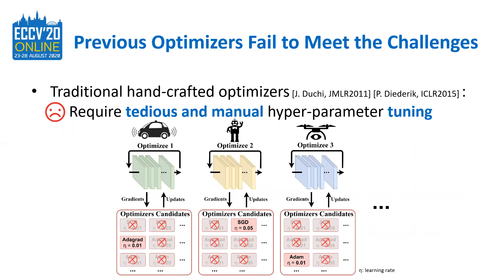For adaptation, we can use two kinds of optimizers, but both fail to meet the challenges mentioned above. One is traditional hand-crafted optimizers like SGD or Adam, but they require heavy and manual hyperparameter tuning, which cannot solve Challenge 1 and 2 at the same time. In other words, they can only achieve faster adaptation and higher accuracy with tuning for a specific model and environment; otherwise, they cannot perform well across various models and environments.